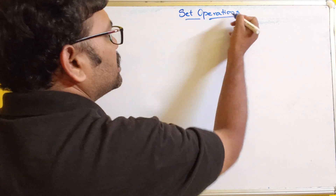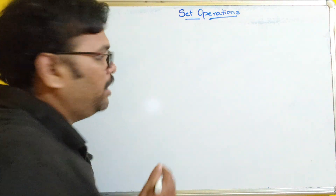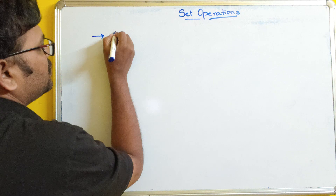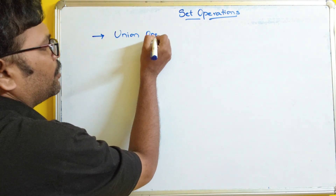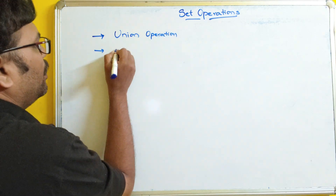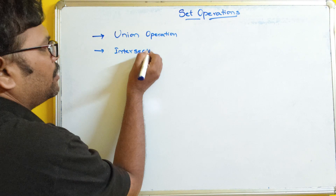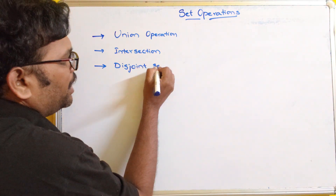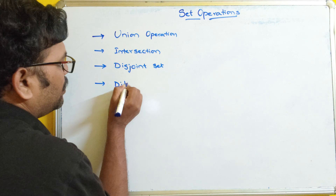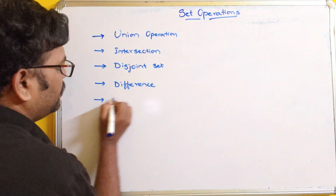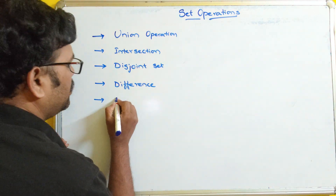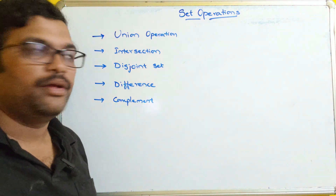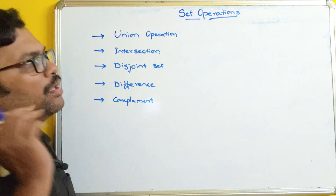First let me list out the different operations that can be performed on a set and we will see them one by one. The first operation — all of you know about these set operations, I hope everyone has studied these in your schooling. So the operations are: union, intersection, disjoint set, difference, and complement.